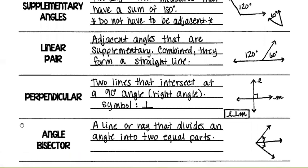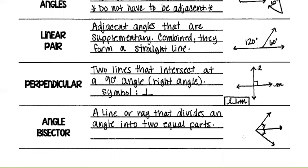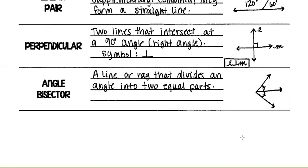Angle bisector: remember, bisector means cut in half. It's a line or ray that divides an angle into two equal parts. This line is cutting the angle in half, and the matching tick marks show the two halves are equal — that is an angle bisector.